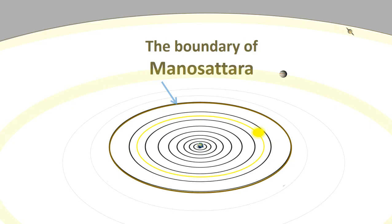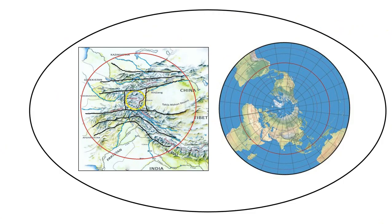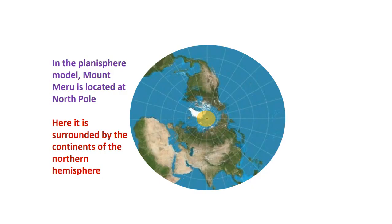A similar principle applies to the boundary of Manasottara in another part of the Bhumandala solar system. Demigods maintain order, daily and annually, within this protective boundary for the earth's benefit — the demigods Indra, Yamaraj, Varuna, and Soma. Next sub-model: connecting the planisphere of the earth with the mountainous regions.